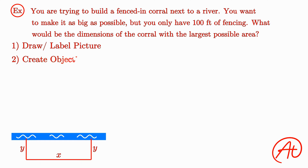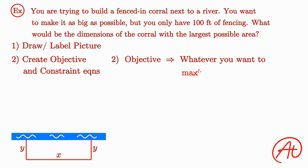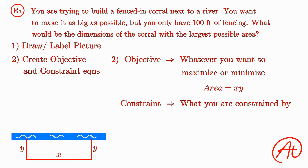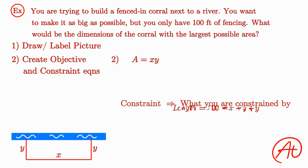Next, we need to find our objective and constraint equations. All that an objective equation is, is the thing that you are trying to maximize or minimize. So for this problem, we want to maximize the corral's area, so that is our objective equation. From our drawing, we can write the area as x times y. Now a constraint equation is anything in the problem that we are constrained by. Since we only have 100 feet of fencing, that is our constraint. To find the total length, we just add up each of our sides to get that 100 must equal the length of x plus the length of y plus the length of y again.